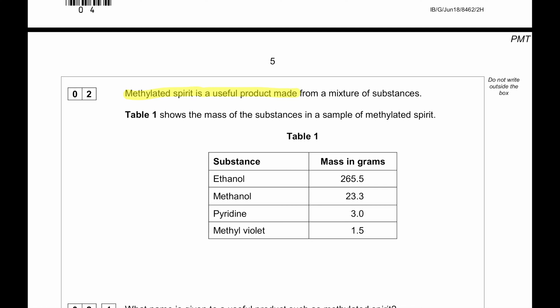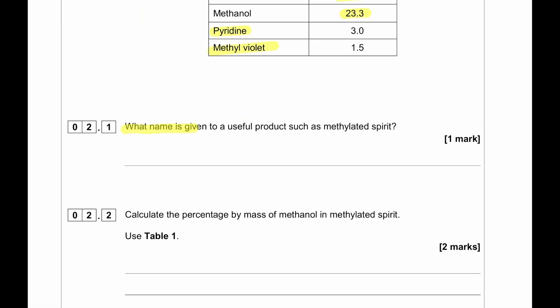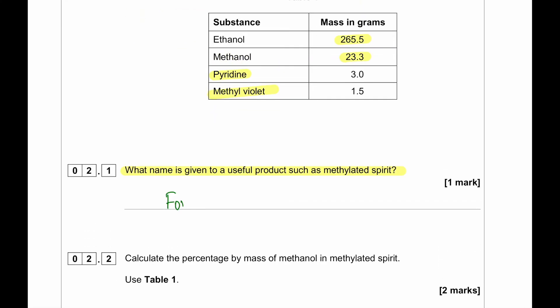Methylated spirit is a useful product made from a mixture of substances. Table 1 shows the mass of the substances in a sample of methylated spirit. Ethanol 265, methanol 23.3, pyridine, methyl violet. What name is given to a useful product such as methylated spirit? Because we have these materials in a fixed ratio, we will call it a formulation.